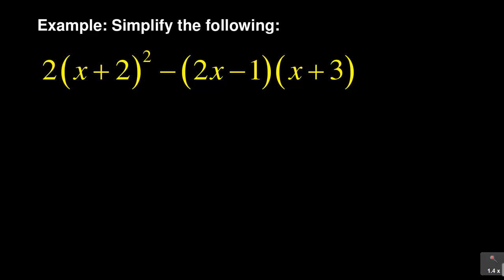So this is what we're given: 2 times (x plus 2) squared, minus (2x minus 1) multiplying (x plus 3). So how do you go about expanding that?